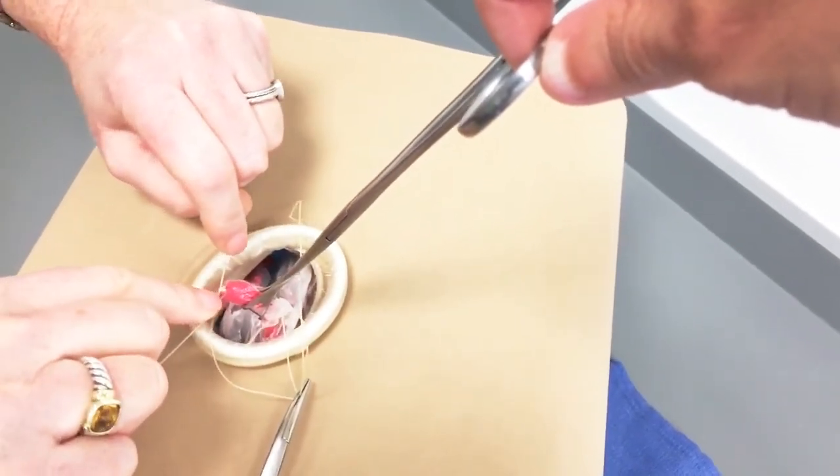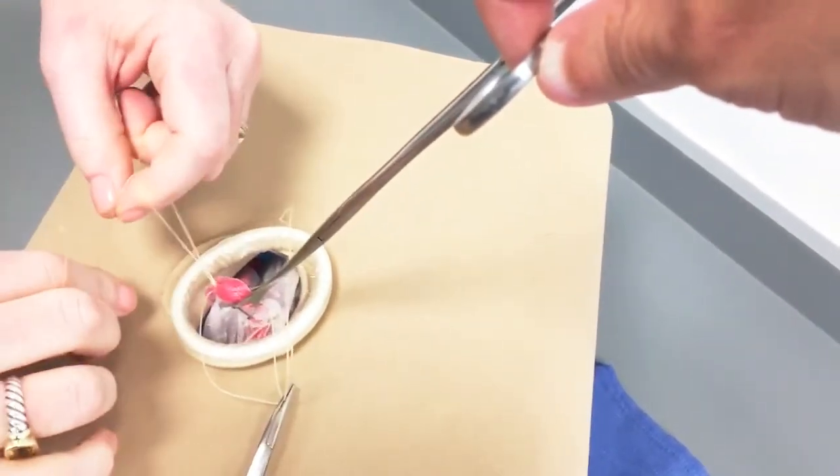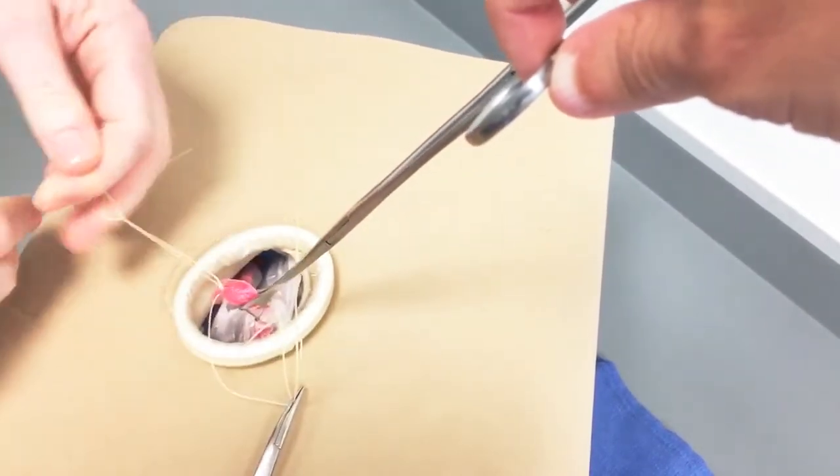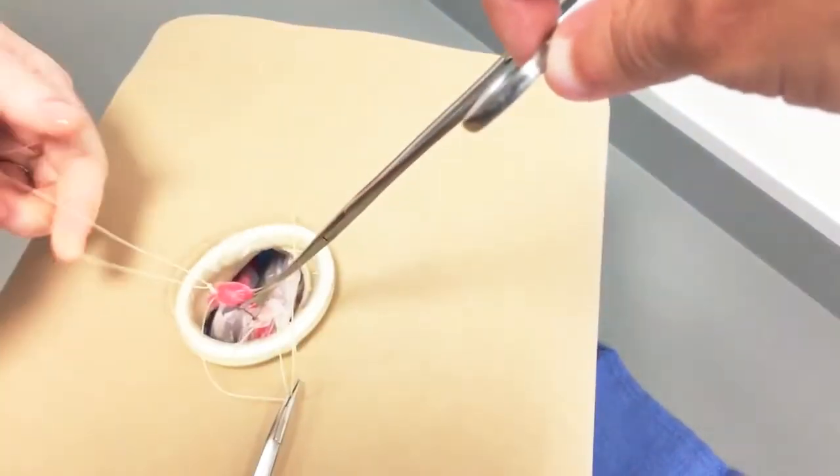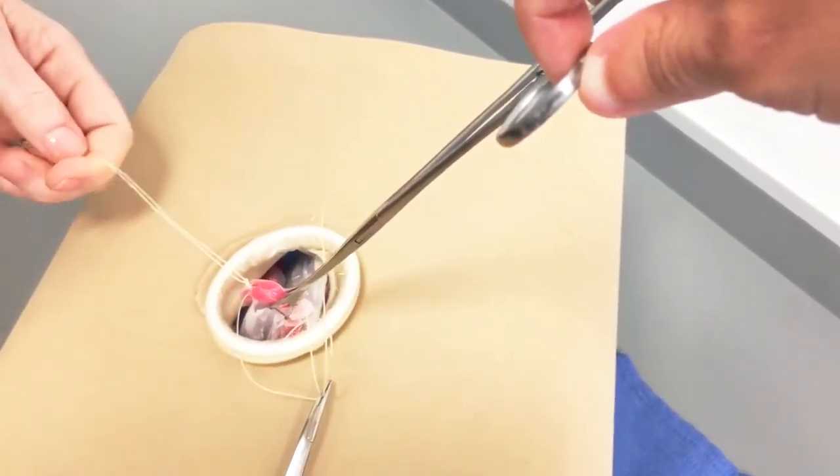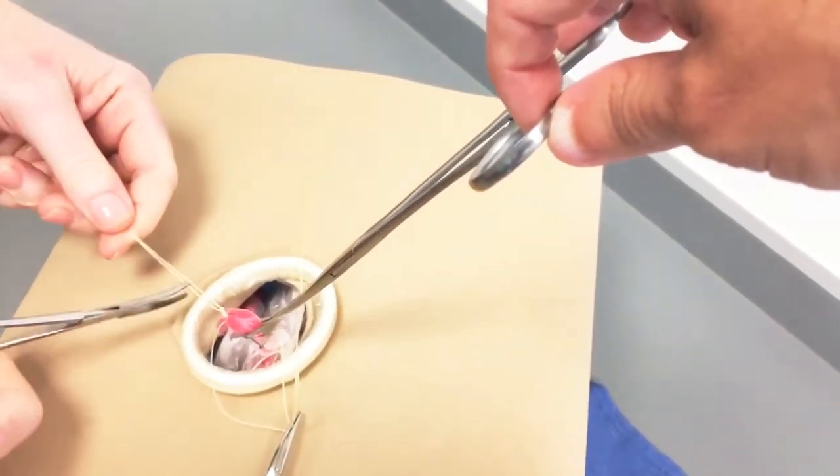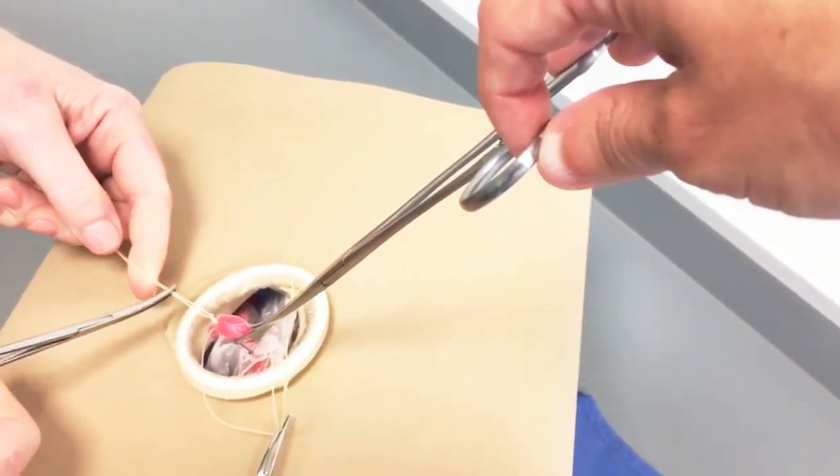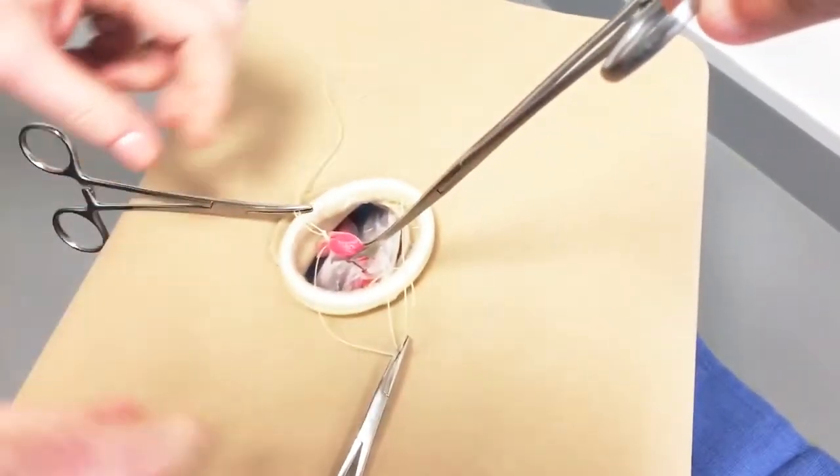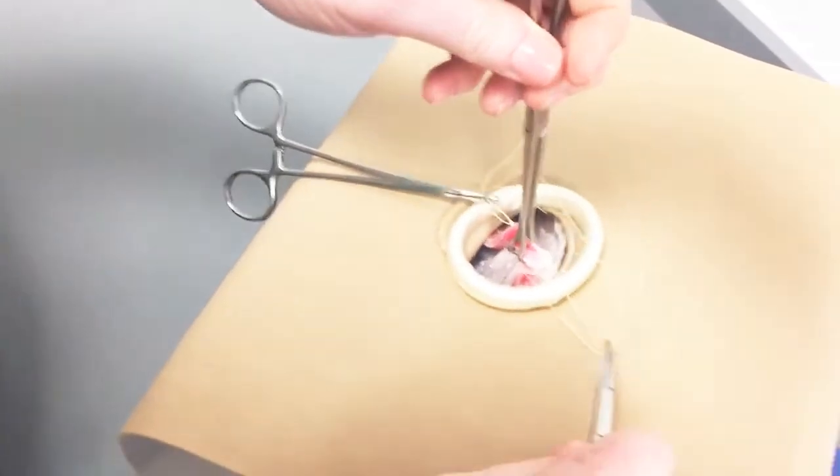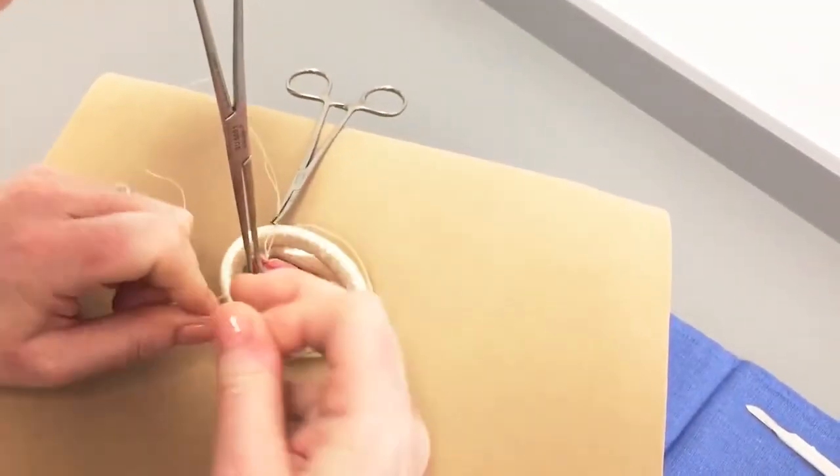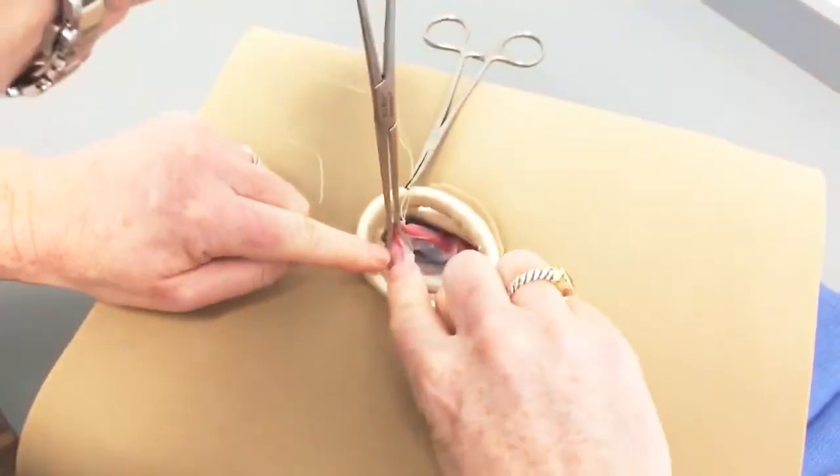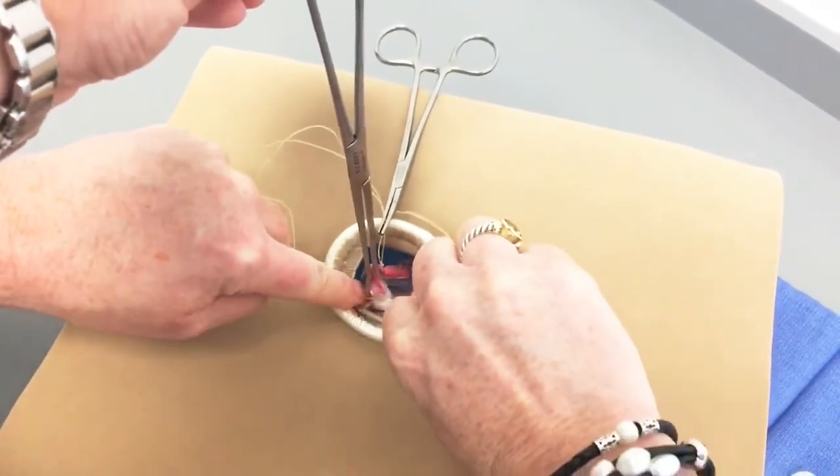We have found that this model is an effective method to teach our residents how to place and remove the self-retaining retractor, how to appropriately place and reposition Babcock clamps, how to correctly identify the fallopian tubes, how to properly throw square knots, and even the benefits of patient positioning.